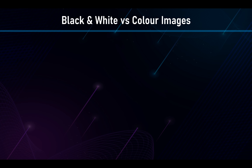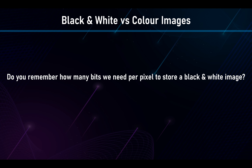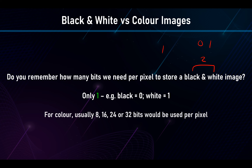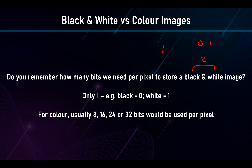For black and white images specifically: since we only have two colors, we only need one bit per pixel — either 0 or 1. For color images, we usually use 8, 16, 24, or even 32 bits per pixel. If we're using 32 bits, this usually includes the alpha channel, which represents opacity — whether the image is see-through or not.